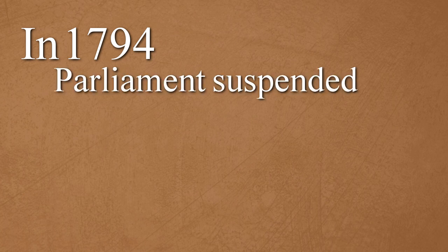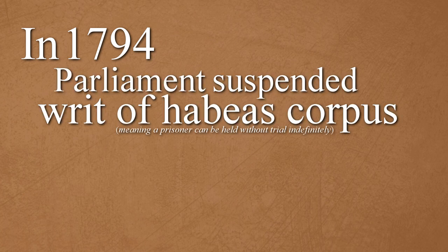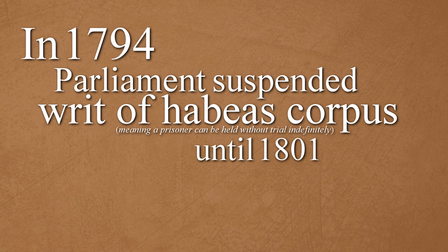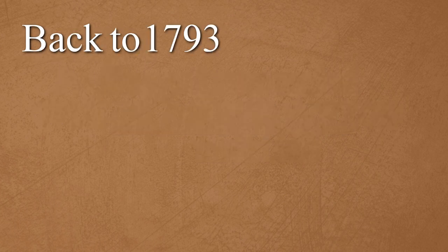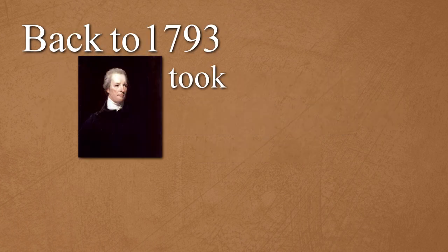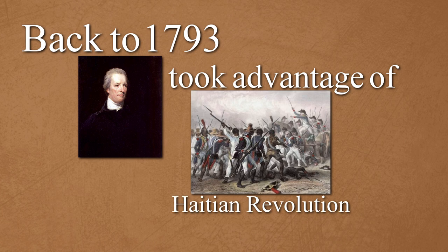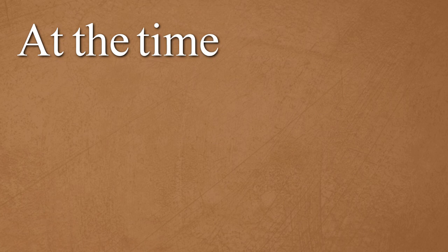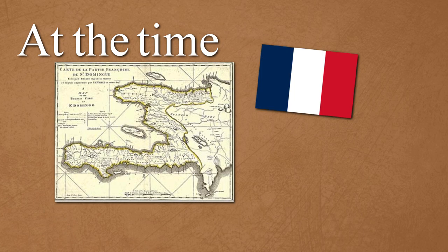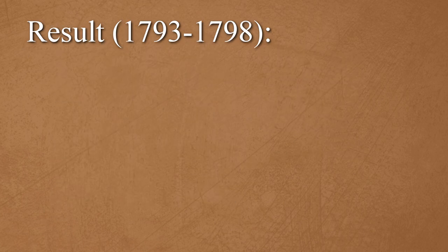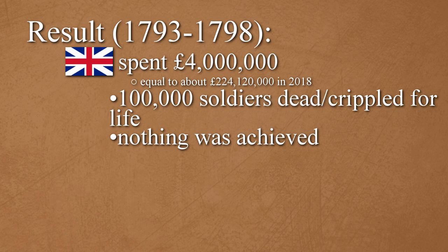In 1794, Parliament also suspended the writ of habeas corpus until 1801. Going back to 1793, Pitt decided to take advantage of the slave revolt in the French colony of Saint-Domingue by trying to conquer it. At the time, this was France's wealthiest colony, but the result was a gigantic failure for Great Britain.